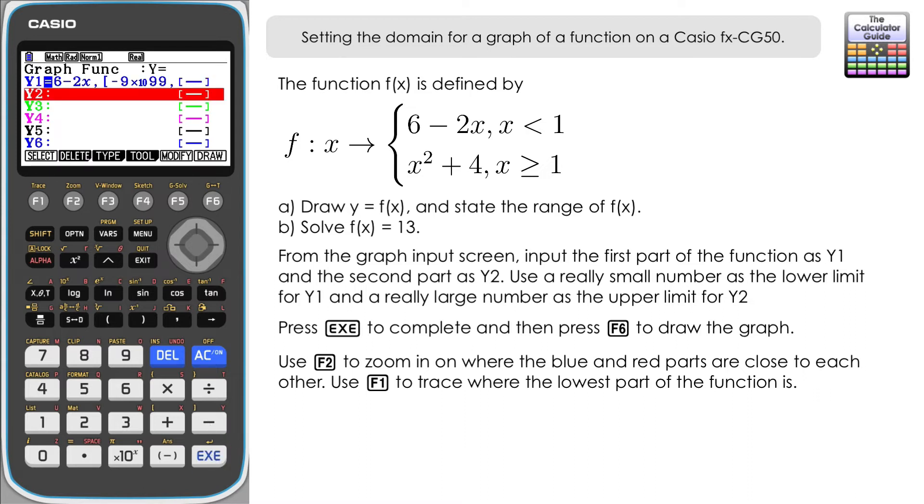And then enter your comma. We're going to define the domain. So the lower limit to that is going to be 1. x is greater than or equal to 1. So the upper limit we'll just put in a large number.